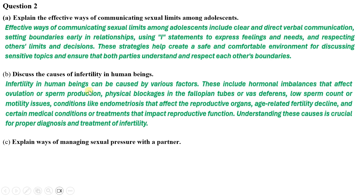Question two (a) — effective ways of communicating sexual limits among adolescents: effective ways include clear and direct verbal communication, setting boundaries early in relationships, using 'I' statements to express feelings and needs, and respecting others' limits and decisions. These strategies help create a safe and comfortable environment for discussing sensitive topics and ensure both parties understand and respect each other's boundaries.